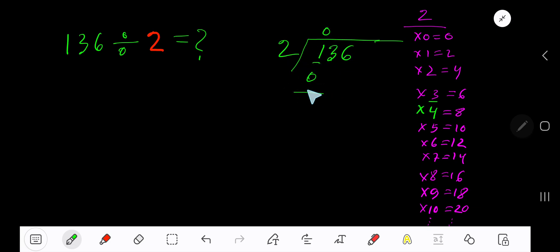0 times 2 is 0. Subtract, and bring down the next digit. 2 goes into 13 how many times? Look, 7 times is 14, which is greater, so 6 times. 6 times 2 is 12. Subtract, and bring down the next digit.